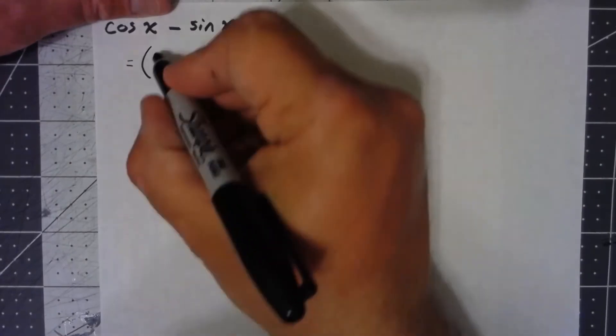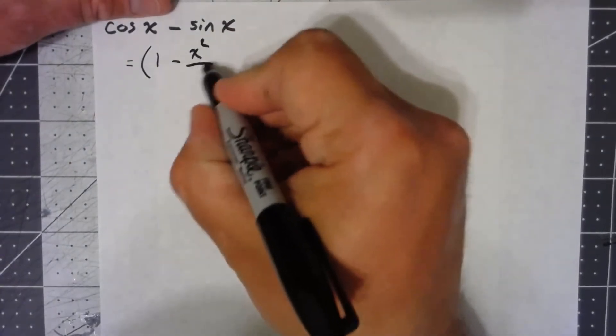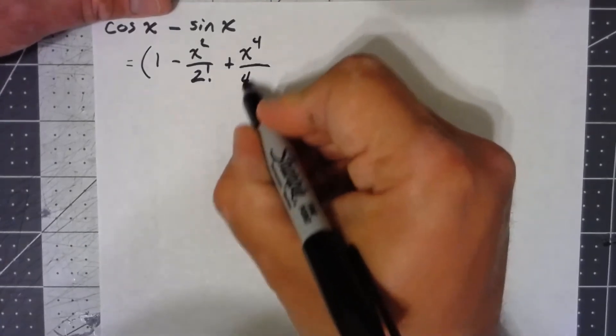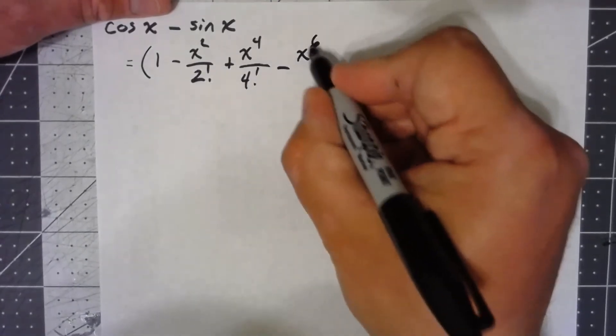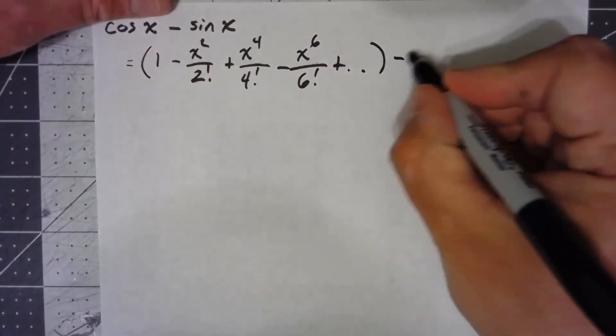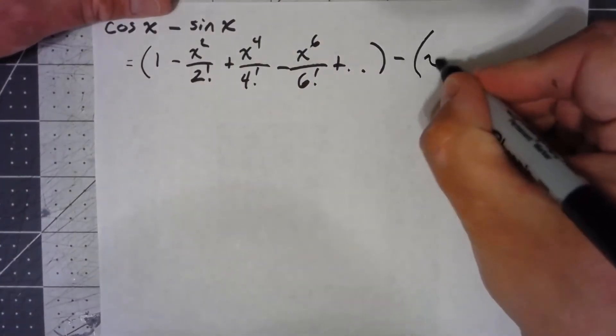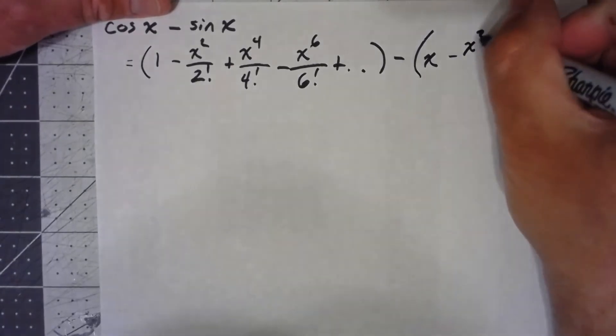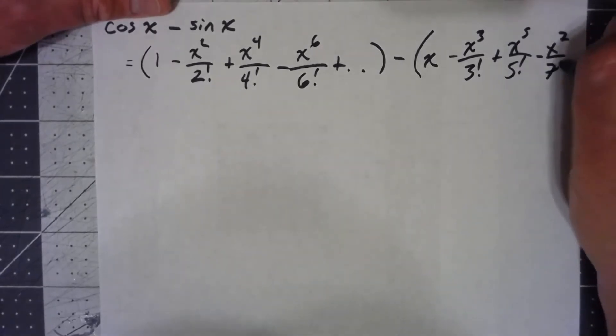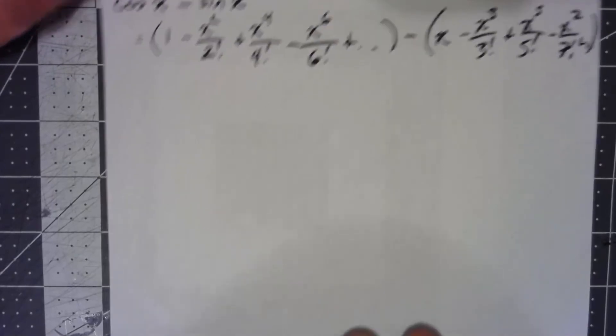So, cosine is 1 minus x squared over 2 factorial plus x to the 4th over 4 factorial minus x to the 6th over 6th factorial. And I've got a minus sine of x is x minus x cubed over 3 factorial plus x to the 5th over 5 factorial minus x to the 7th over 7 factorial and so on like that.